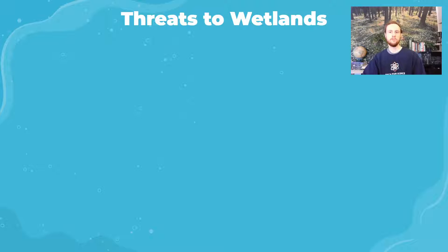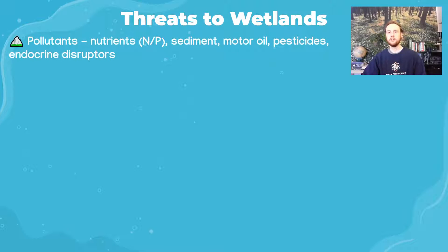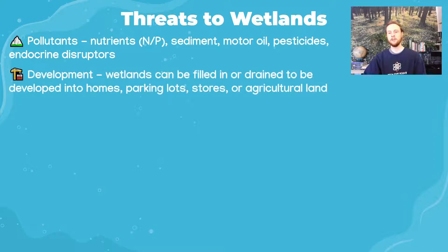Threats to wetlands from human activities include nutrient pollution, but also other pollutants such as sediment, motor oil from pavement washing into storm drains, pesticides from agricultural fields, and endocrine disruptors — medical compounds that pass through the human body or are improperly flushed. Development is another major threat: wetlands can be filled in or drained to create stable land for homes, parking lots, stores, or agricultural use, completely removing them and all the ecosystem services they provide.